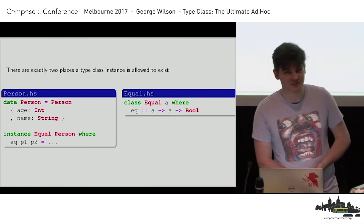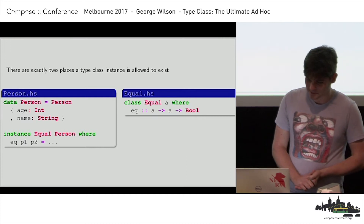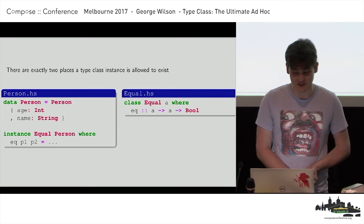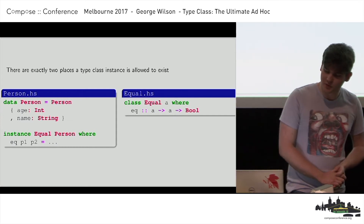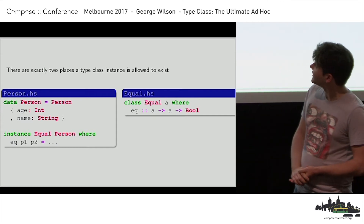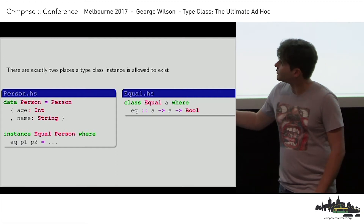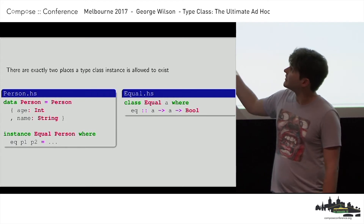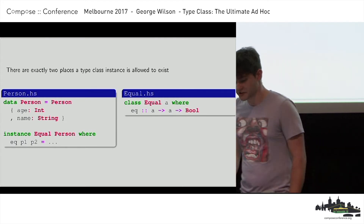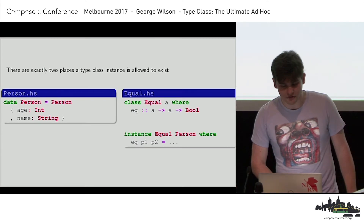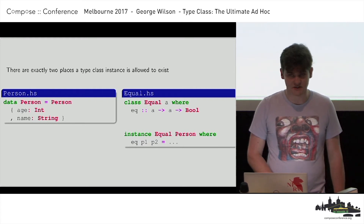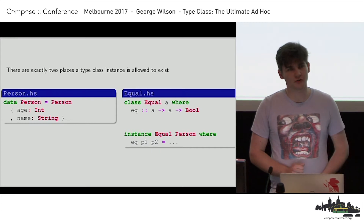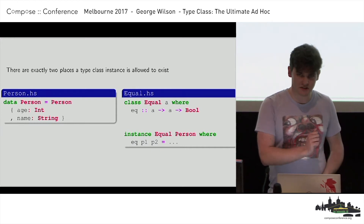Here are the restrictions. There are exactly two places a type class instance is allowed to exist. Here we've got a Person.hs or an Equal.hs Haskell file. We can give a type class instance for the Equal type class for the Person type either in the file that defines the type — in this case Person — or in the file that defines the type class, in this case Equal. So you still have to have control over one of those modules, but it's either one.